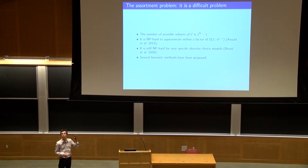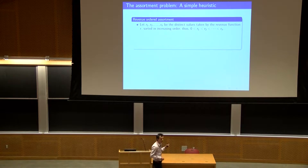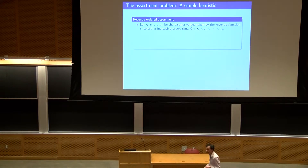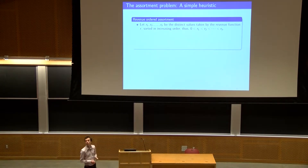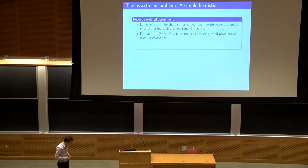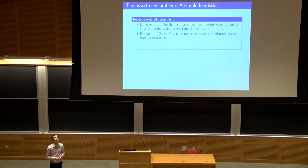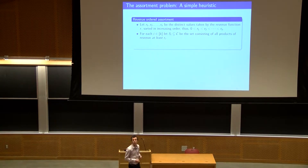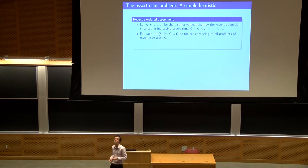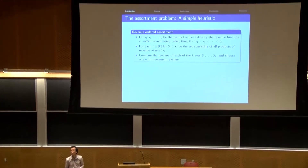There are several heuristics proposed in the literature. One basic heuristic is called revenue order assortment. Suppose we have distinct values of the revenue function r1 to rk, where rk is the maximum and r1 is the minimum. For each index from 1 to k, we denote S_i to be all elements with revenue at least r_i. So S1 is all items, S2 is all items except the cheapest, and so on. The heuristic simply evaluates the revenue on each of these subsets S1 to Sk and selects the one that gives the most revenue.